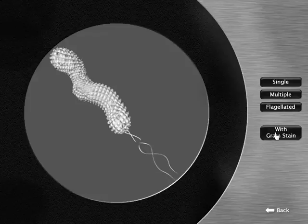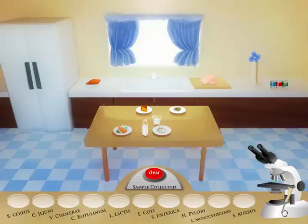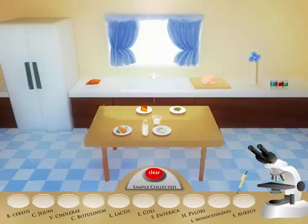If you are unsure of what bacteria you have sampled, you can always refer back to the bacteria database. Once you feel you know the type of bacteria you have viewed, click the word 'back' at the bottom right of your screen. You will be returned to the kitchen and lab table scene. The lab table has petri dishes labeled with ten different types of bacteria. Click on the petri dish labeled with the bacteria you have viewed.